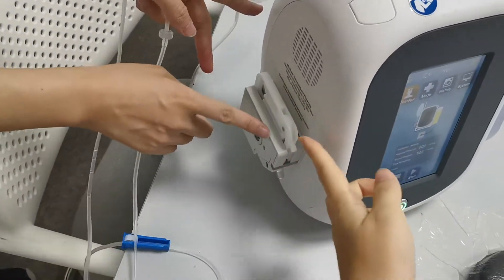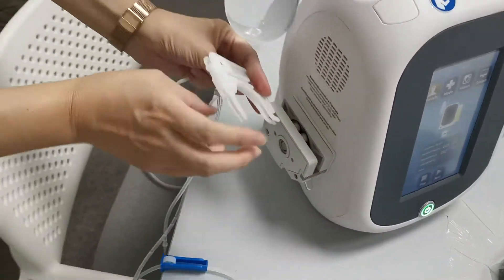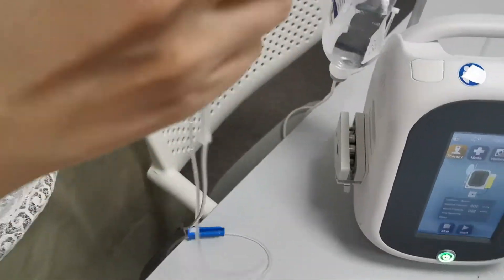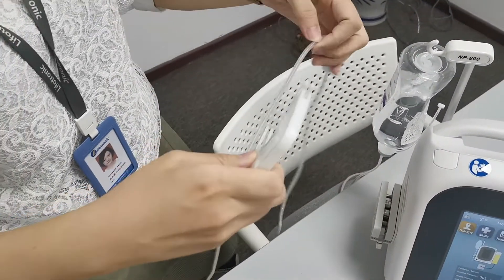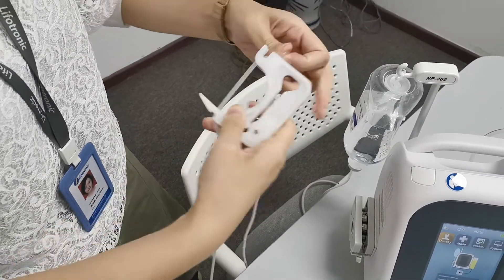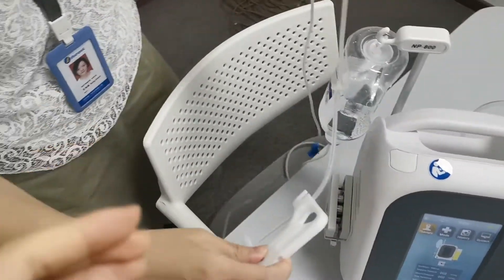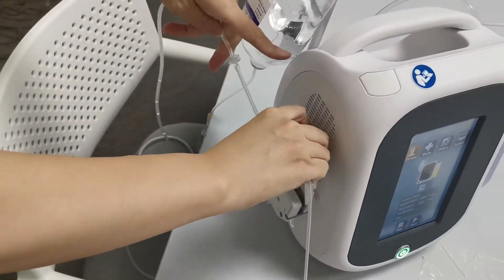And then the second step, we're going to remove this cassette and then put the installation tube inside the cassette. And then we're going to put it back.